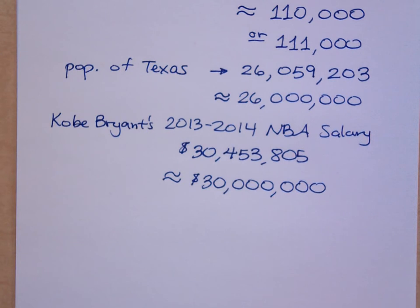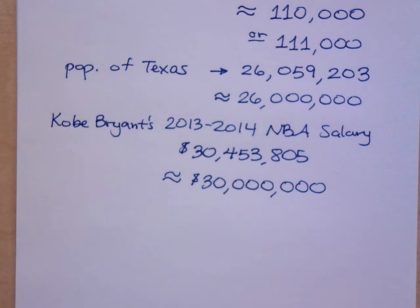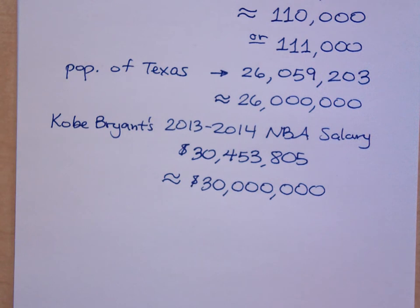Question about rounding: the answer depends. It depends on where you're rounding to. You're trying to go to the closest number based on whatever position, whatever place value you want to round to. If you want to round to the nearest hundred versus the nearest thousand, those rounded numbers may be a little bit different. Here I was just rounding and estimating like we normally do in everyday conversations.